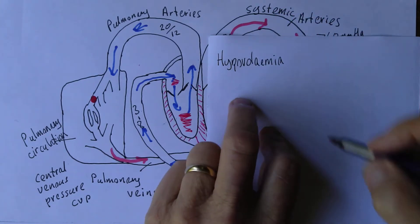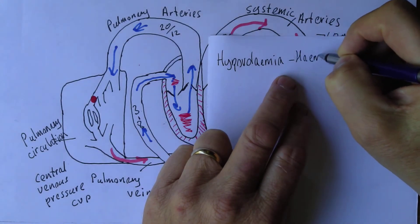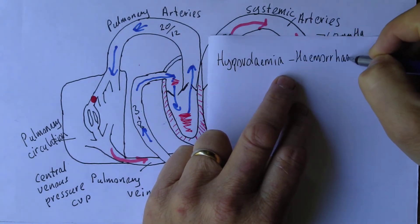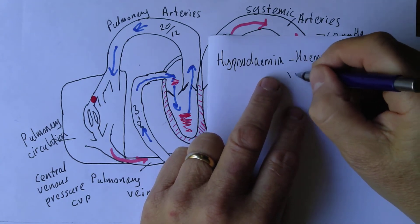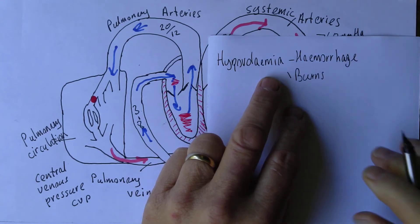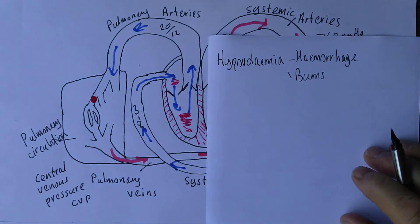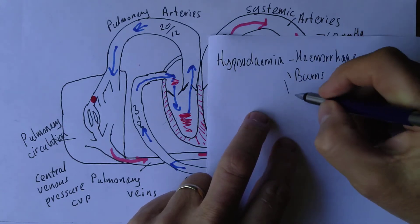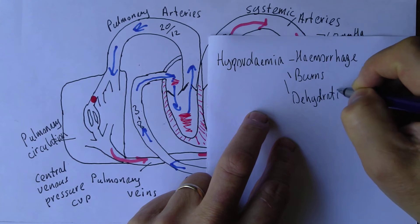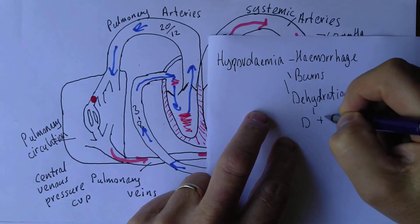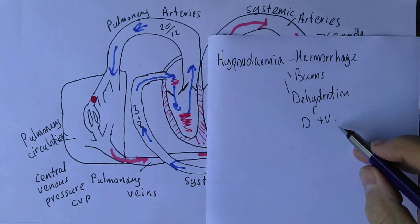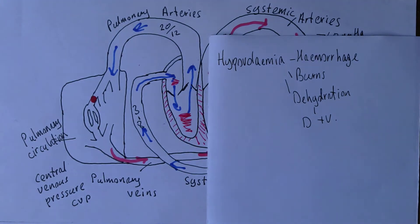After hemorrhage, blood volumes can drop. Burns patients can lose an awful lot of fluids. Dehydration, possibly caused by diarrhea and vomiting, is a very common problem in children. Children have much lower blood volumes than adults, so diarrhea and vomiting, especially in young children, needs to be taken seriously. We need to give them fluid replacement at an early stage, preferably with oral rehydration salts.